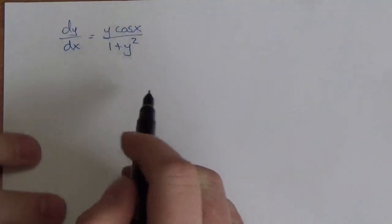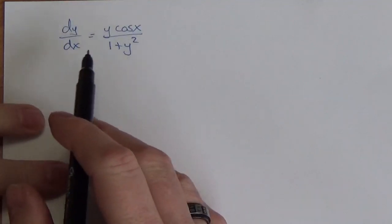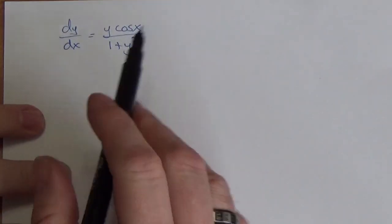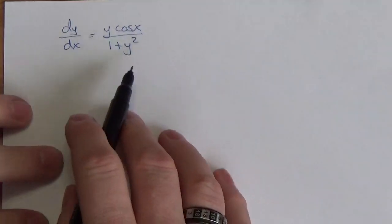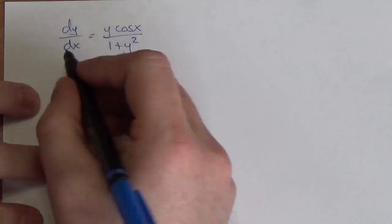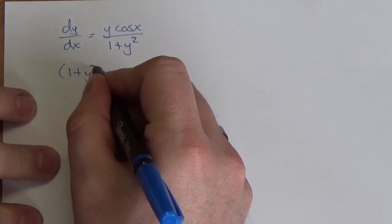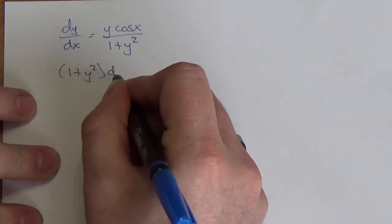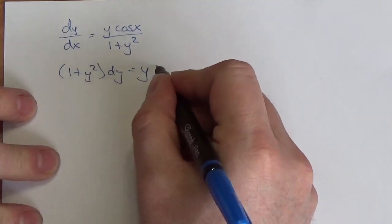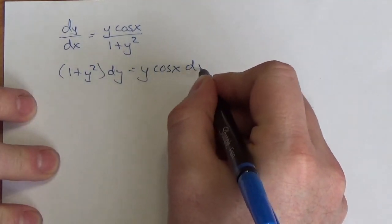For this question we're going to solve this differential equation here. It's a simple separable differential equation because when I cross multiply, I'm going to get 1 plus y squared dy is going to equal y cosine of x dx.